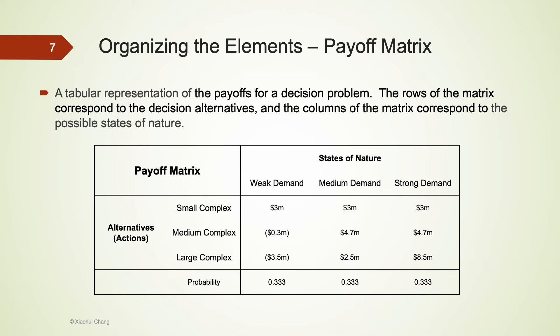We also list the probabilities of each state of nature at the very bottom, and they are one-third.